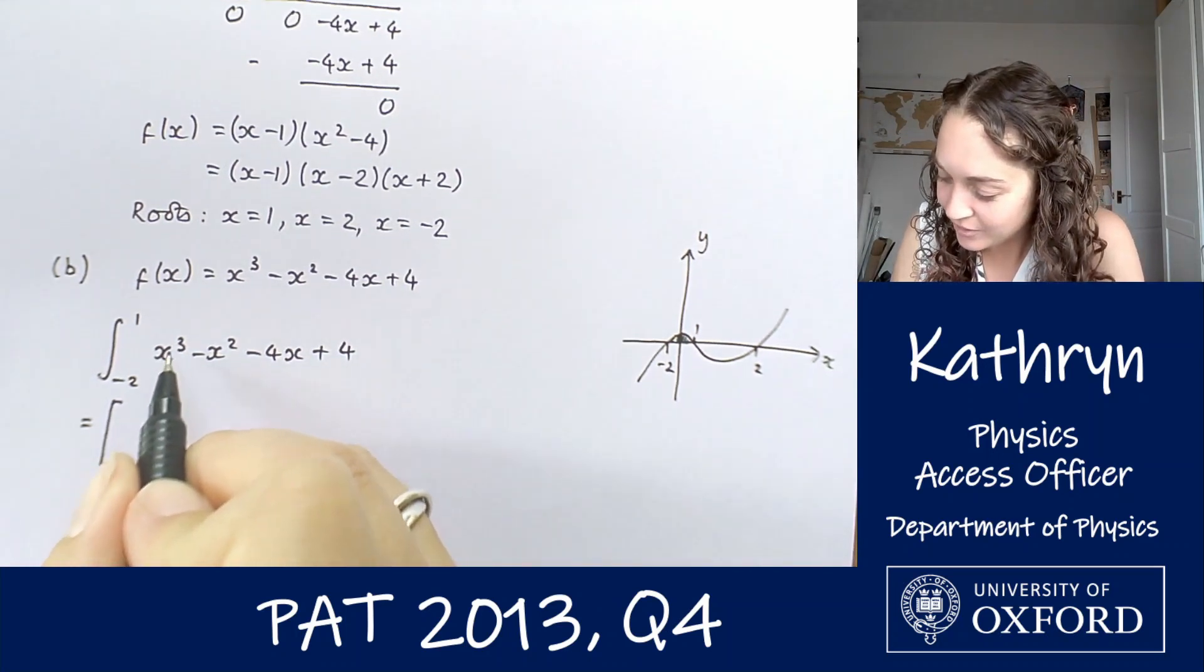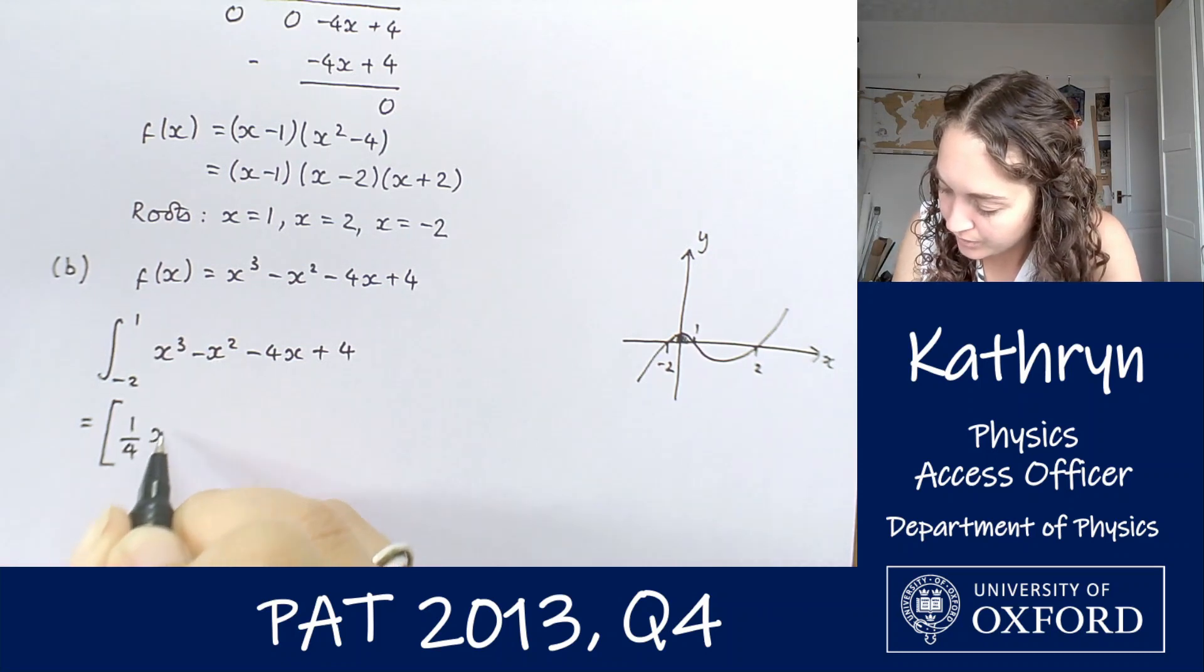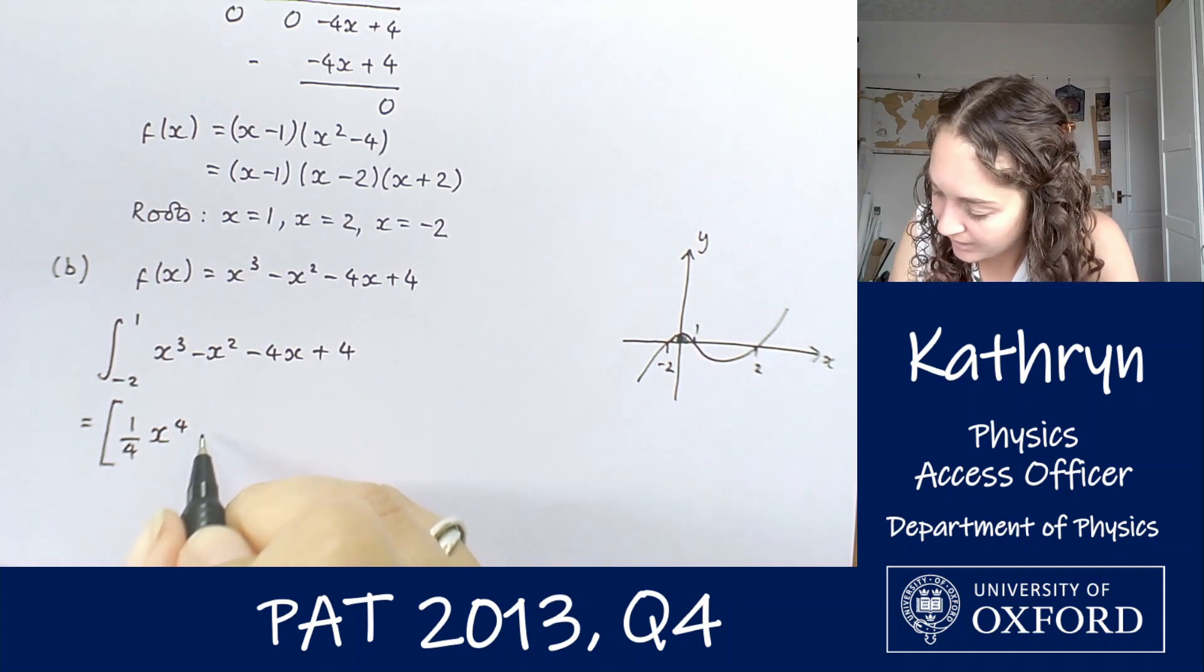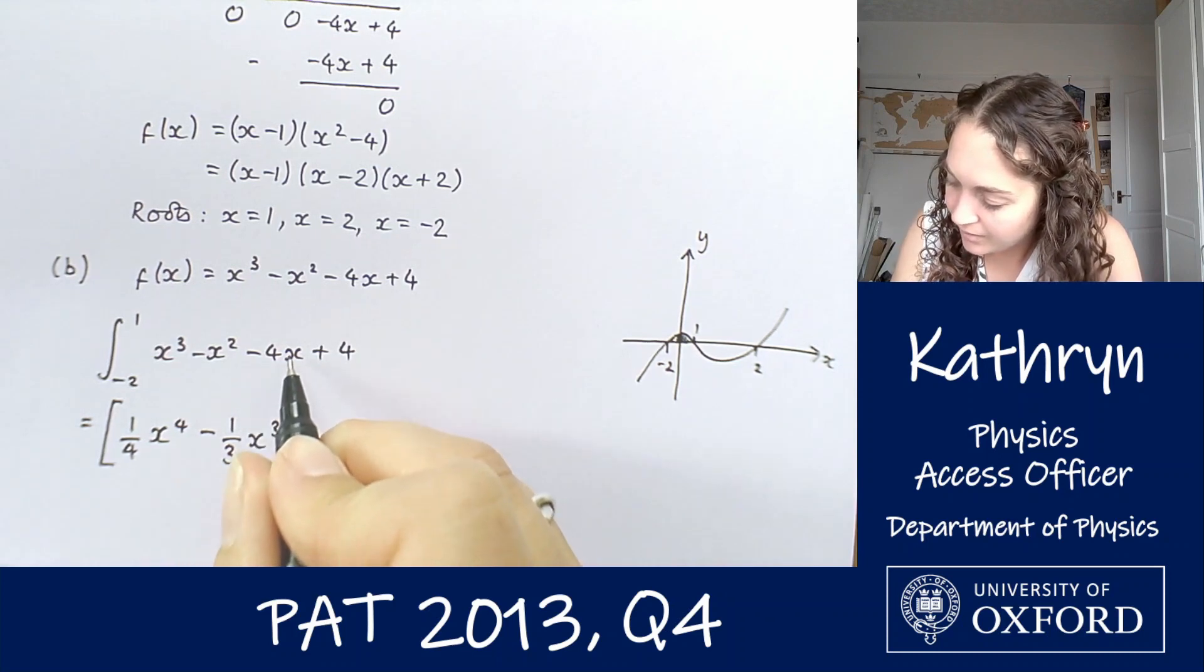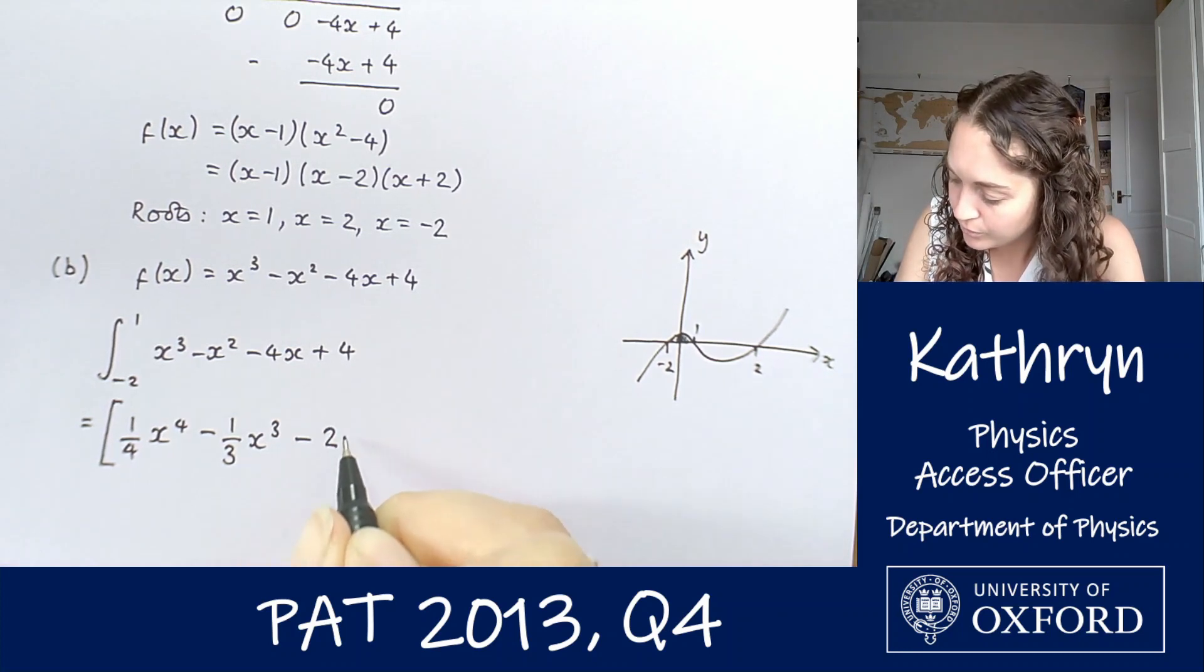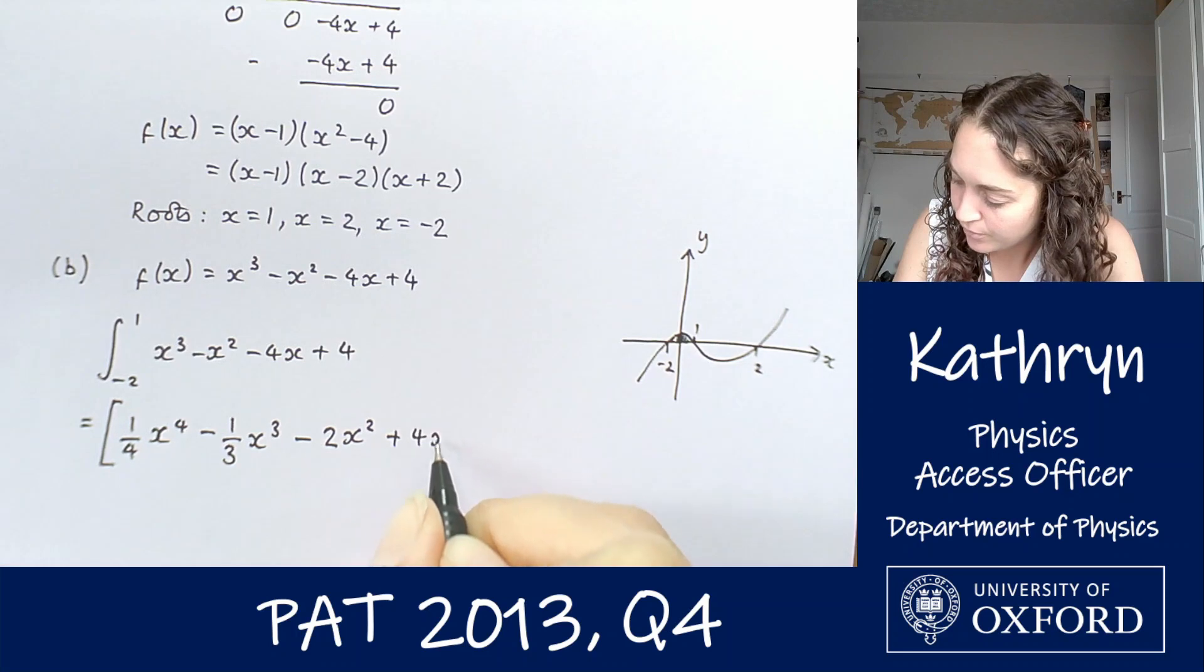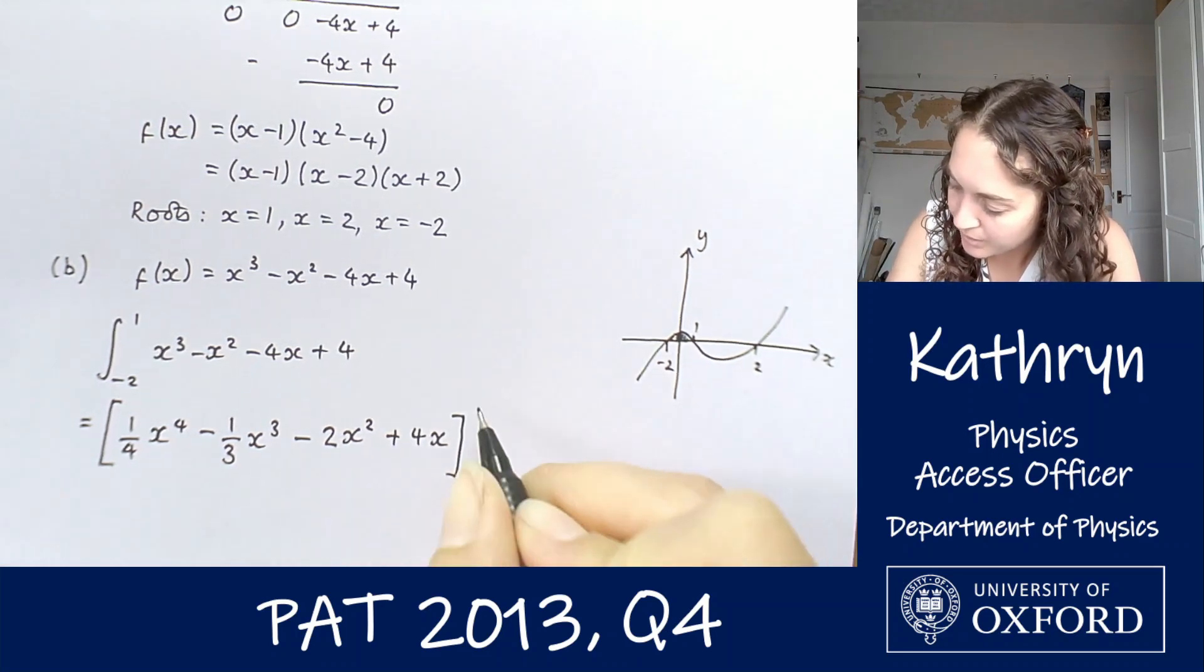So integration between minus 2 and 1 of x cubed minus x squared minus 4x plus 4. We're going to leave the bounds for now and just do the bit with the x's first. If we integrate x cubed, we get 1 quarter x to the 4. If we integrate x squared, we get minus 1 third x cubed. Our x is going to become x squared divided by 2, which gives us minus 2x squared. And our 4 becomes 4x. We need to remember our bounds, so we're doing it between minus 2 and 1.